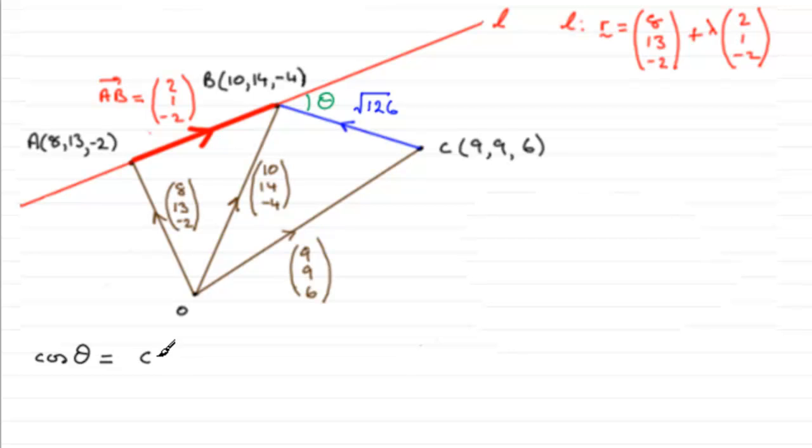So we'll just work out C to B dotted with the vector A to B, and remember, for this, we always divide by the magnitude of our two vectors, so the magnitude of the vector C to B multiplied by the magnitude of the vector A to B. So that's that bit.